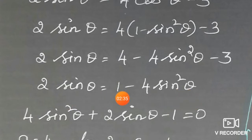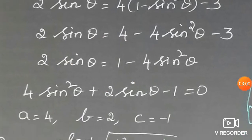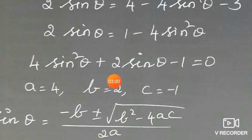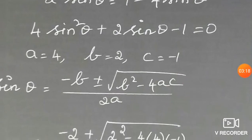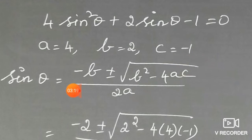Bringing all terms to the left-hand side: 4sin²θ + 2sin θ − 1 = 0. This is a quadratic equation in terms of sin θ. We use the quadratic formula x = (−b ± √(b² − 4ac)) / 2a, where a = 4, b = 2, c = −1.